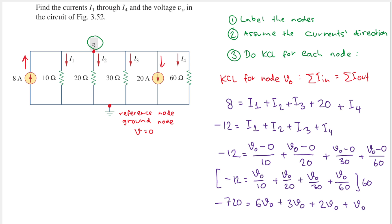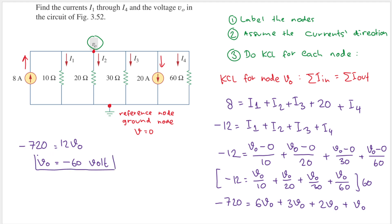Adding up the coefficients: 6 + 3 + 2 + 1 = 12, so we have −720 = 12·v0. Dividing both sides by 12, we get v0 = −60 volts.